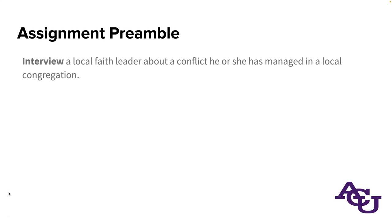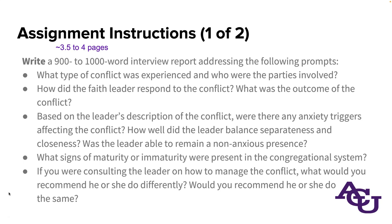The instructions say you're supposed to interview a local faith leader about a conflict they have managed in a local congregation — something in your metro region, culturally or nationally similar to what you have experienced. The paper should be 900 to 1000 words, roughly three and a half to four pages of body text, not counting the title page or references. You have a series of five prompts to answer: What type of conflict was experienced and who were the parties involved? How did the faith leader respond and what was the outcome?